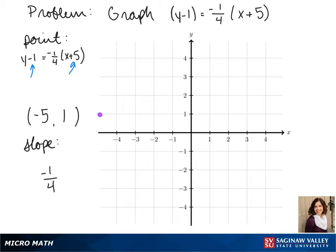We plot our point, negative 5, 1, then we count down 1 and over 4. Remember that since our slope is negative, one of the directions we move has to be negative.